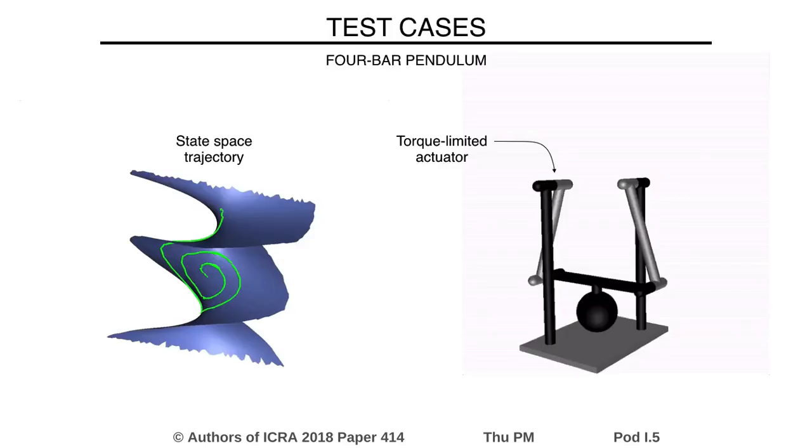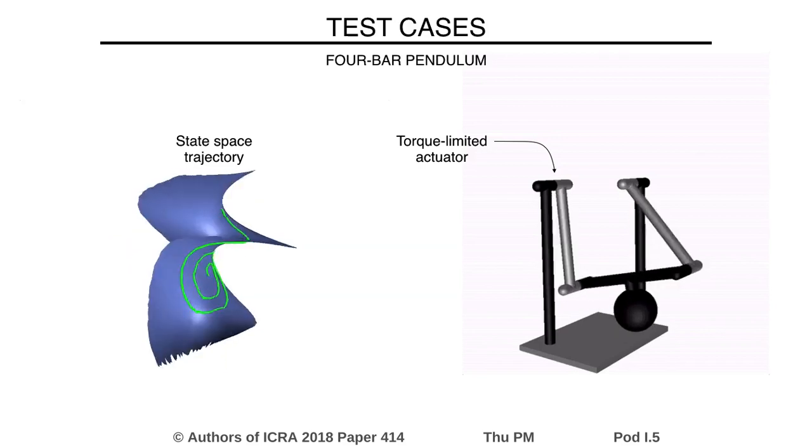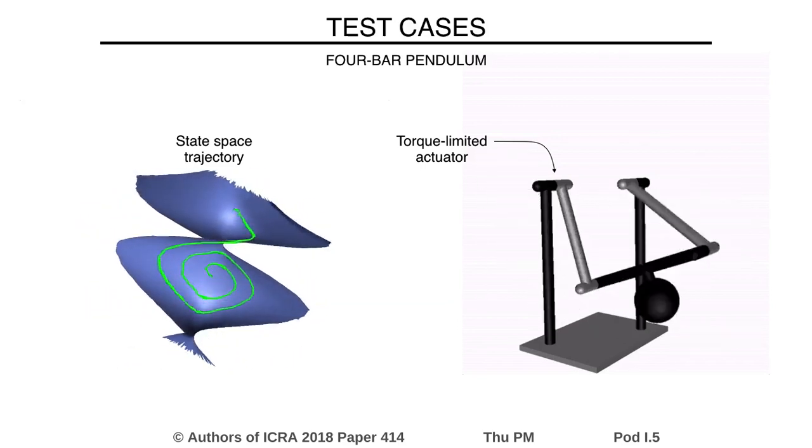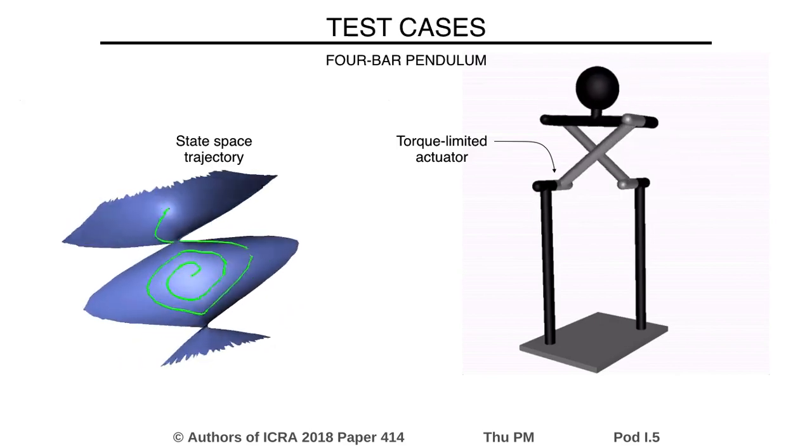We show the performance of the planner in several test cases. In this example, we wish to move a four-bar pendulum to an upright position. To cope with the torque bounds at the actuator, the planner generates an oscillating motion that successively pumps up energy until the goal is reached.